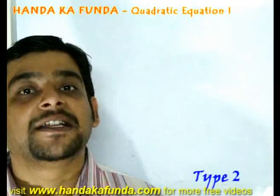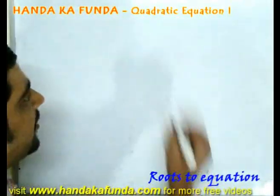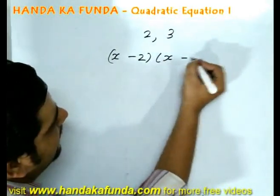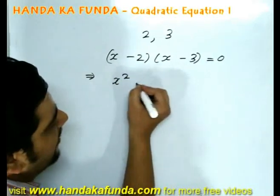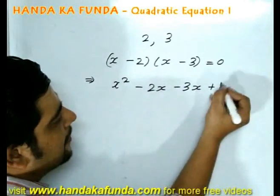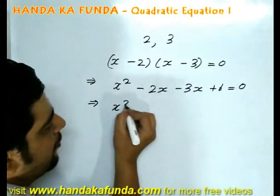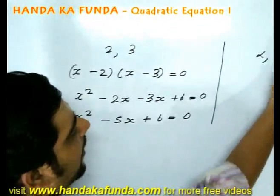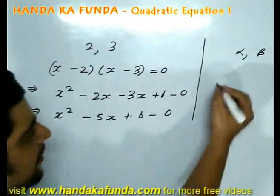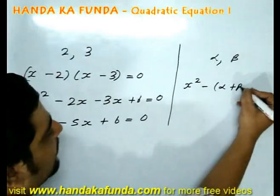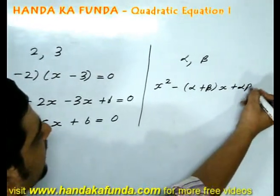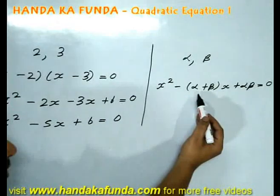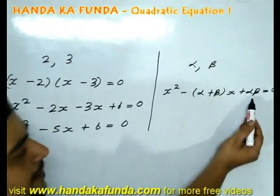Let us see what the equation will be if the roots are provided to us. For example, if the roots are 2 or 3, then I can say my equation will be x minus 2 into x minus 3 is equal to 0. Which I can work out to be x square minus 2x minus 3x plus 6 is equal to 0. Also, x square minus 5x plus 6 is equal to 0. What I mean is, if I am given the roots alpha and beta, then I can directly say the equation will be x square minus of alpha plus beta into x plus alpha beta is equal to 0. As you can see, b or the coefficient of x is negative of sum of the roots here. And the c, the constant value is the product of the roots.